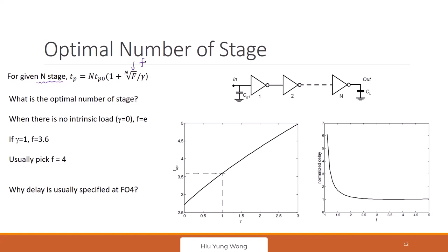So first of all, when there's no intrinsic loading, it means gamma equals zero. Because remember CD equals gamma CG, right? So if there's no loading, then gamma equals zero. You want to find an f that gives you the exponential, f equals exponential. This is related to the optimal number of stages. Remember, this is for a given n stages, but let's say no one tells you what to do. Their boss did not say that you need to do 10 stages. Then what is the optimal number of stages?